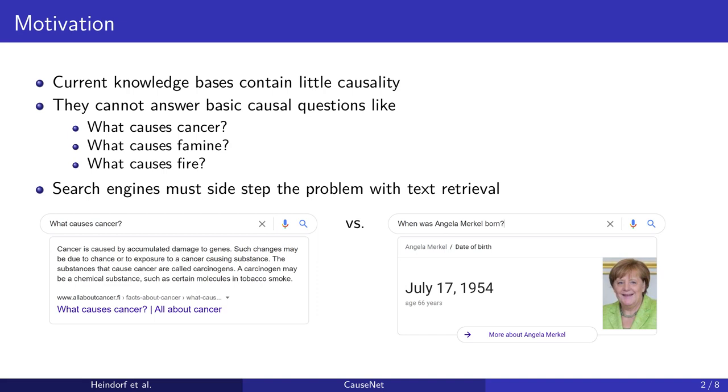Search engines must sidestep the problem with text retrieval. For example, asking Google what causes cancer, Google displays a textual result and the user is left with reading it, extracting relevant information and possibly exploring further links.